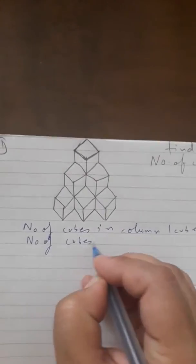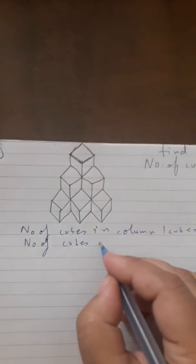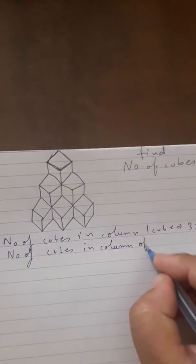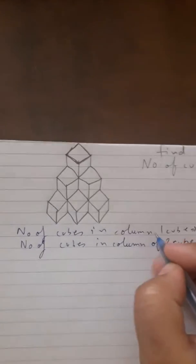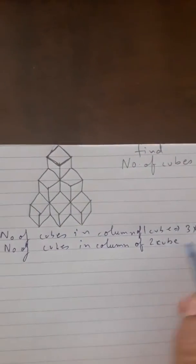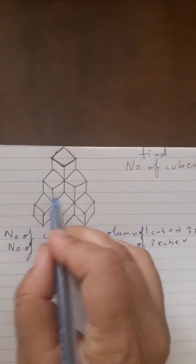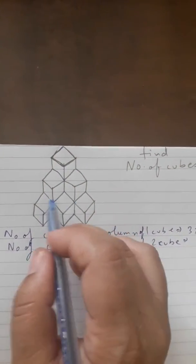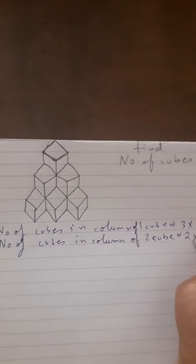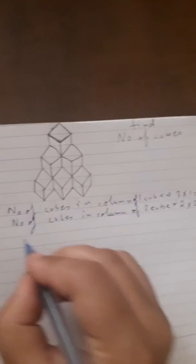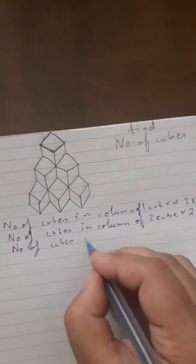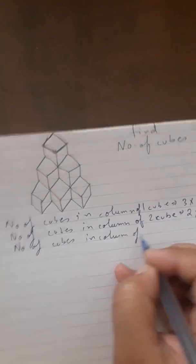Next we will find the number of cubes in columns of two cubes. You can see here there are two cubes — that means two columns of two cubes, which is two into two, giving four.